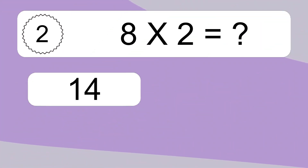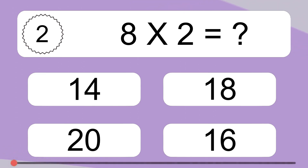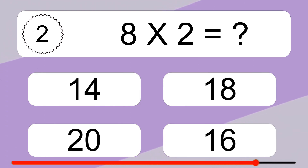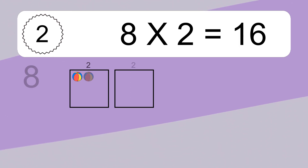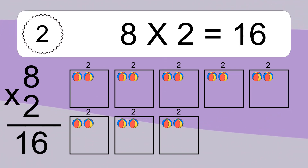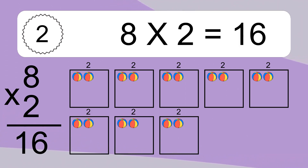8 times 2 equals what? 8 times 2 equals 16. We have 8 boxes, and each box has 2 colorful balls inside. If you count all the balls in all the boxes together, you will have 8 times 2 balls. This equals 16 balls.